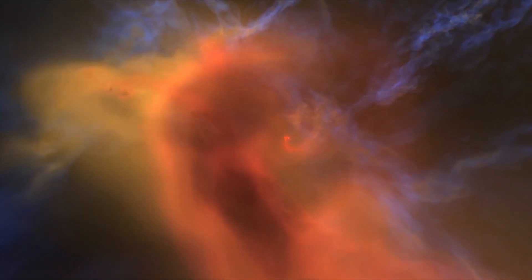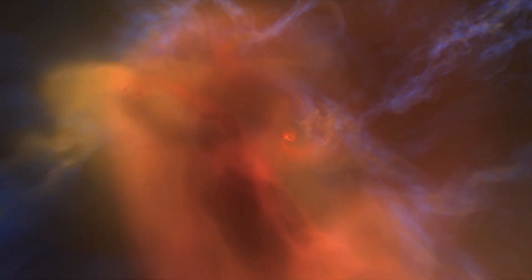Our solar system formed from the collapse of a large gas cloud about 4.5 billion years ago. Scientists first thought that the formation was a very gradual process, taking place across hundreds of millions of years.